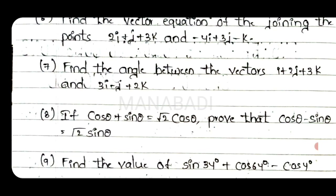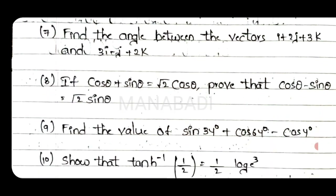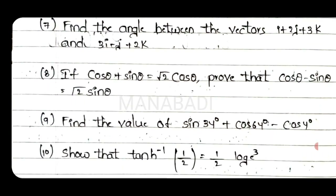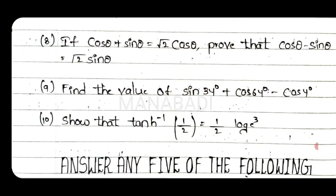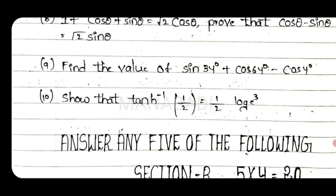This is the sixth question. Seventh question: find the angle between the vectors i plus 2j plus 3k and 3i minus j plus 2k. This is the seventh question. Eighth question: if cos theta and sin theta equals under root 2 cos theta, prove that cos theta minus sin theta equals under root 2 sin theta. Ninth question: find the value of sin 34 plus cos 64 minus cos 4. Tenth question: show that tanh inverse of half equals to half log 3.